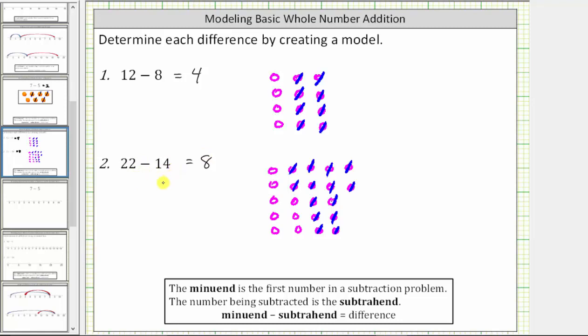And again, we can interpret this subtraction equation several ways. We can think of this as 22 decreased by 14 is 8, 14 subtracted from 22 as well as 14 less than 22 is 8. I hope you found this helpful.